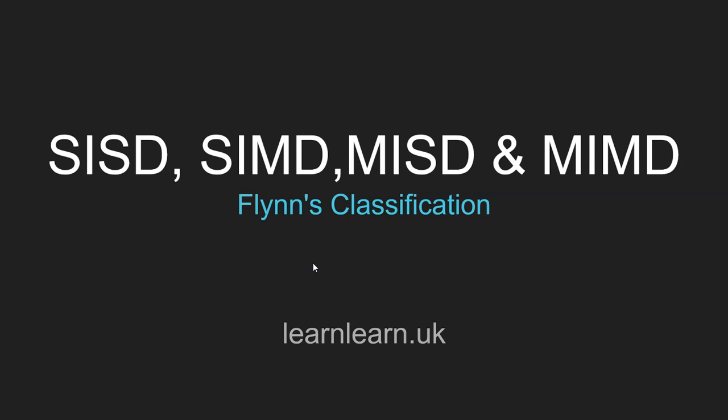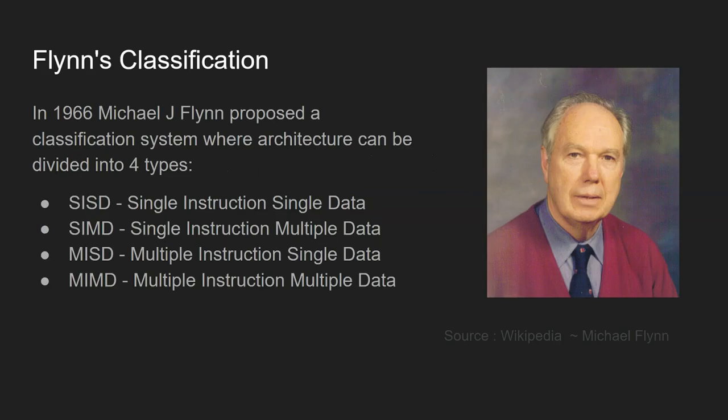Welcome to another Learn Computer Science video. In this video we're going to be looking at Flynn's classification: SISD, SIMD, MISD and MIMD. So first of all, what is it? Well, it was proposed by Michael J. Flynn back in 1966, a professor currently at Stanford, and he said that you can break architecture down into four different types.